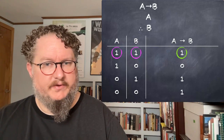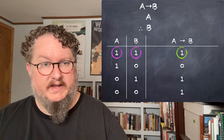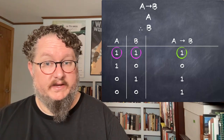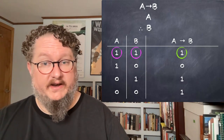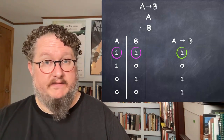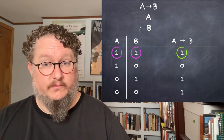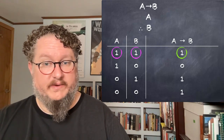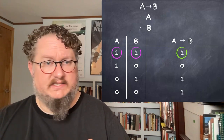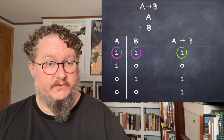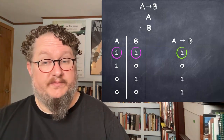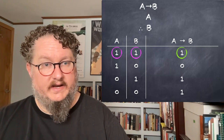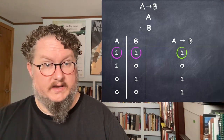Also remember, truth tables get exponentially larger and more complicated as the number of sentence letters increases. With two sentence letters we have four lines; with three we have eight; with four we have sixteen; and with only 10 sentence letters we're already up to 1024 lines. Proofs, by contrast, can get at the underlying reasoning involved in an argument and help us understand why the argument is valid.